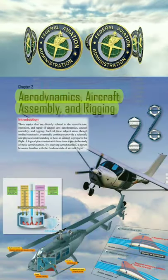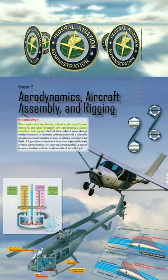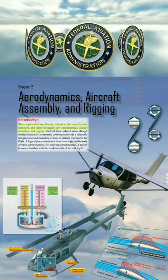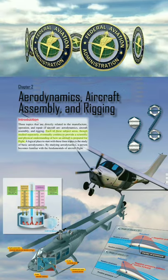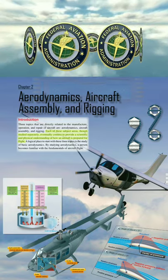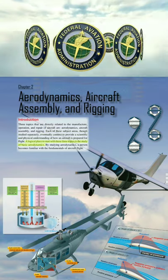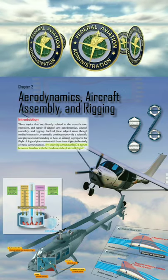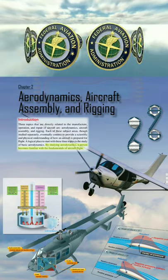Chapter 2: Aerodynamics, Aircraft Assembly, and Rigging. Introduction. Three topics that are directly related to the manufacture, operation, and repair of aircraft are aerodynamics, aircraft assembly, and rigging. Each of these subject areas, though studied separately, eventually connect to provide a scientific and physical understanding of how an aircraft is prepared for flight. A logical place to start with these three topics is the study of basic aerodynamics. By studying aerodynamics, a person becomes familiar with the fundamentals of aircraft flight.